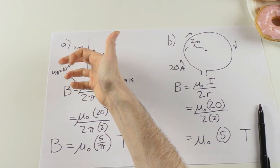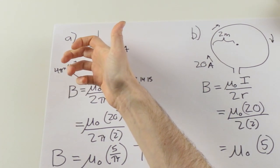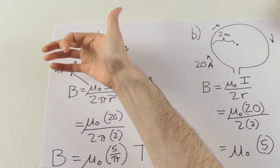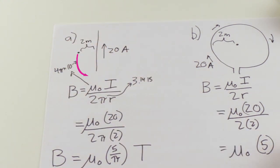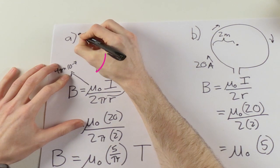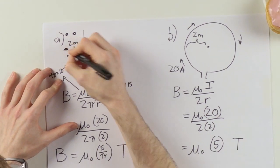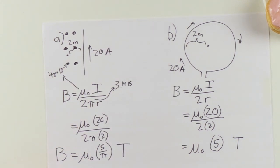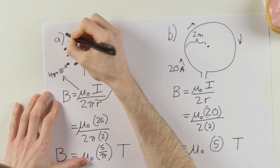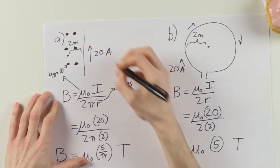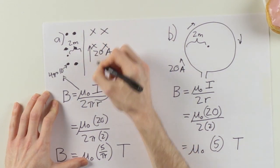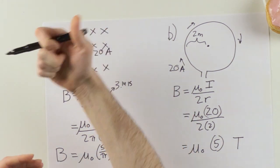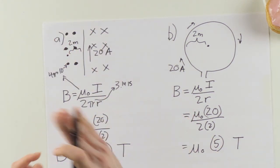So for part a, the right hand rule looks like this, and my fingers are coming out of the page. That means my answer is that this current's coming out of the page at this particular point. The way I draw that is by having a bunch of big old dots. If it was going into the page, it would be a bunch of X's, and that's what it looks like on the other side of the wire because it's a circle, the whole field.